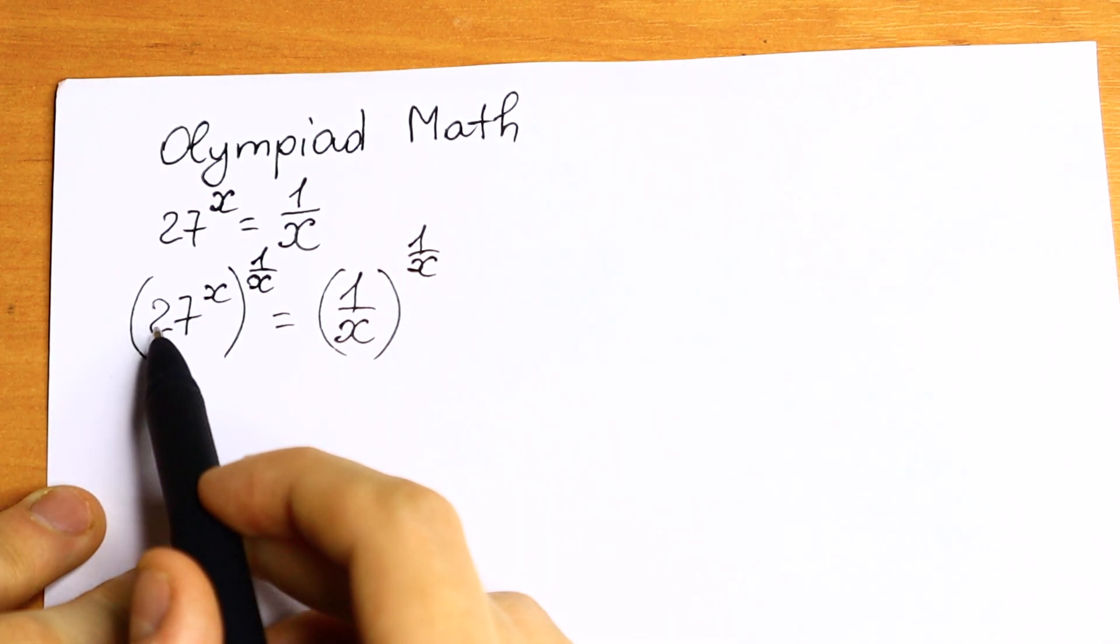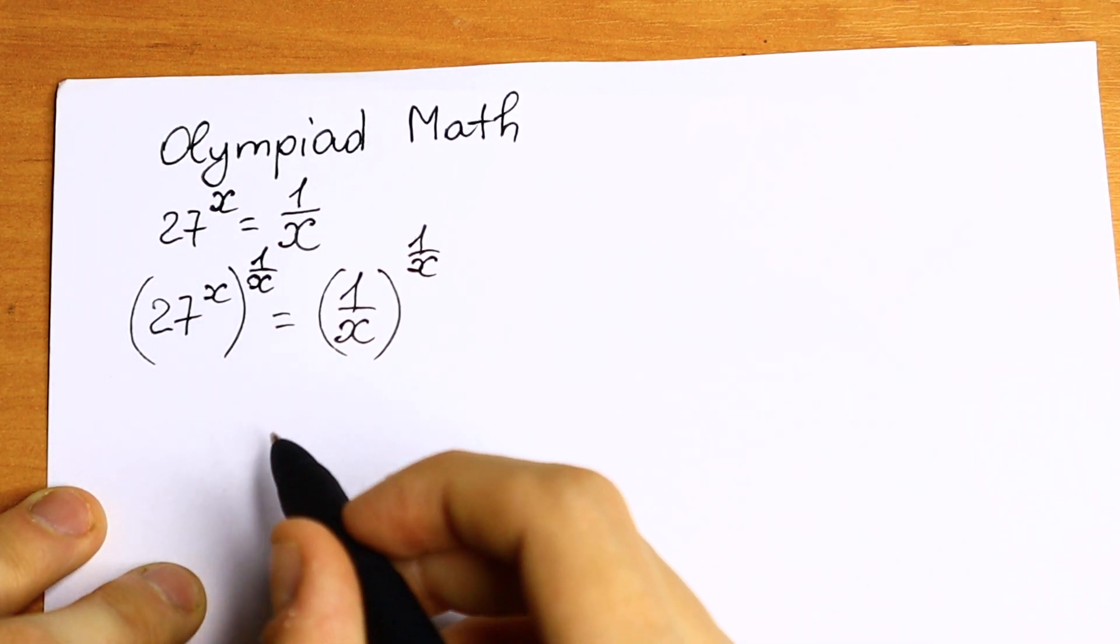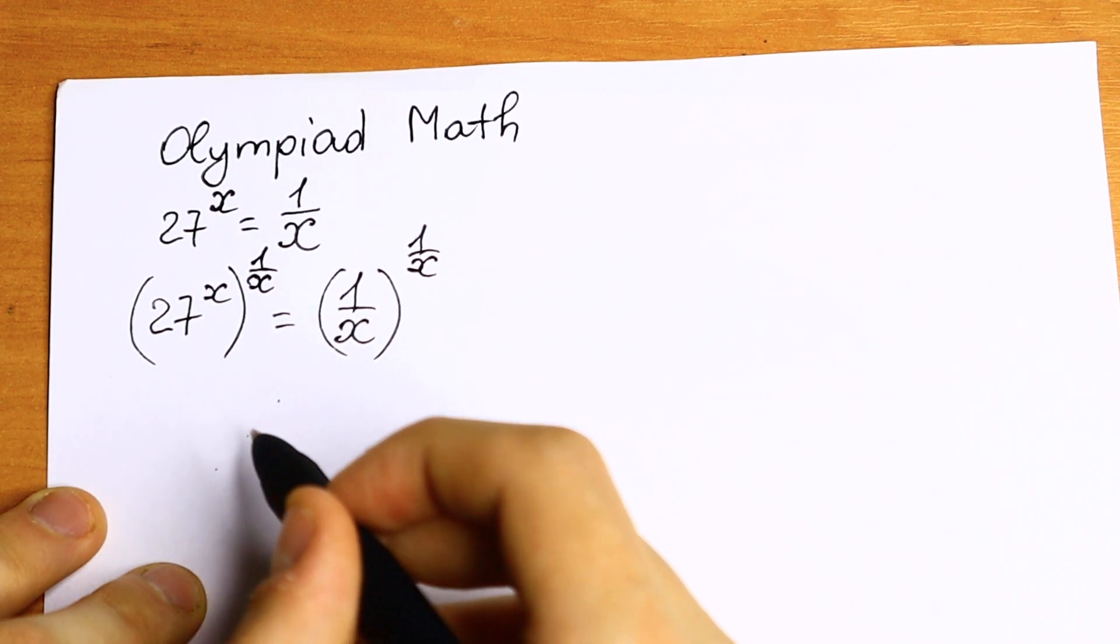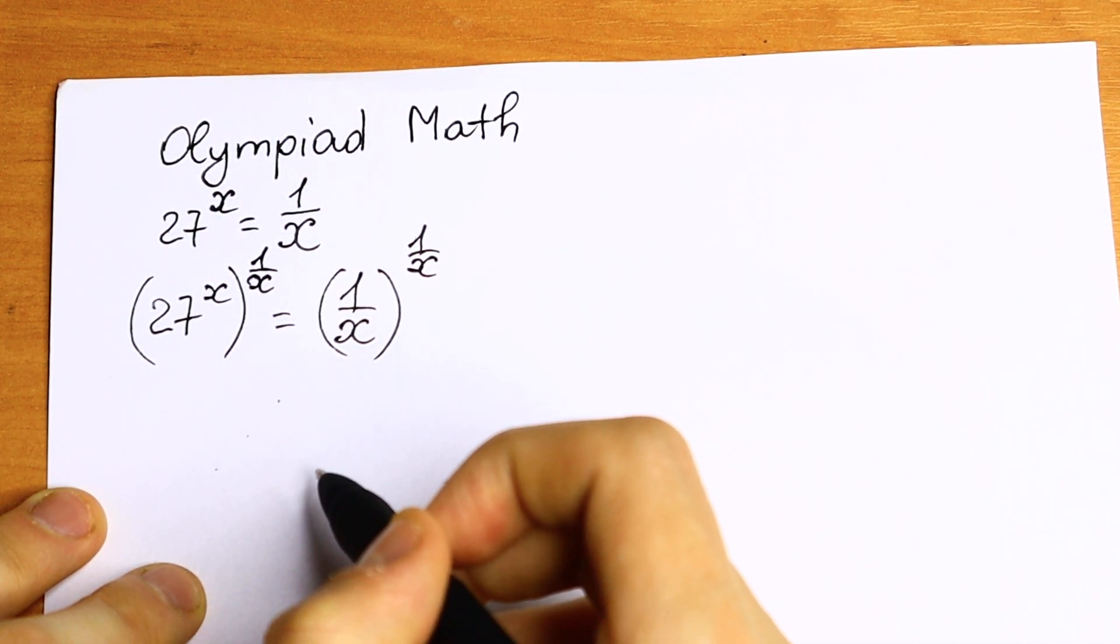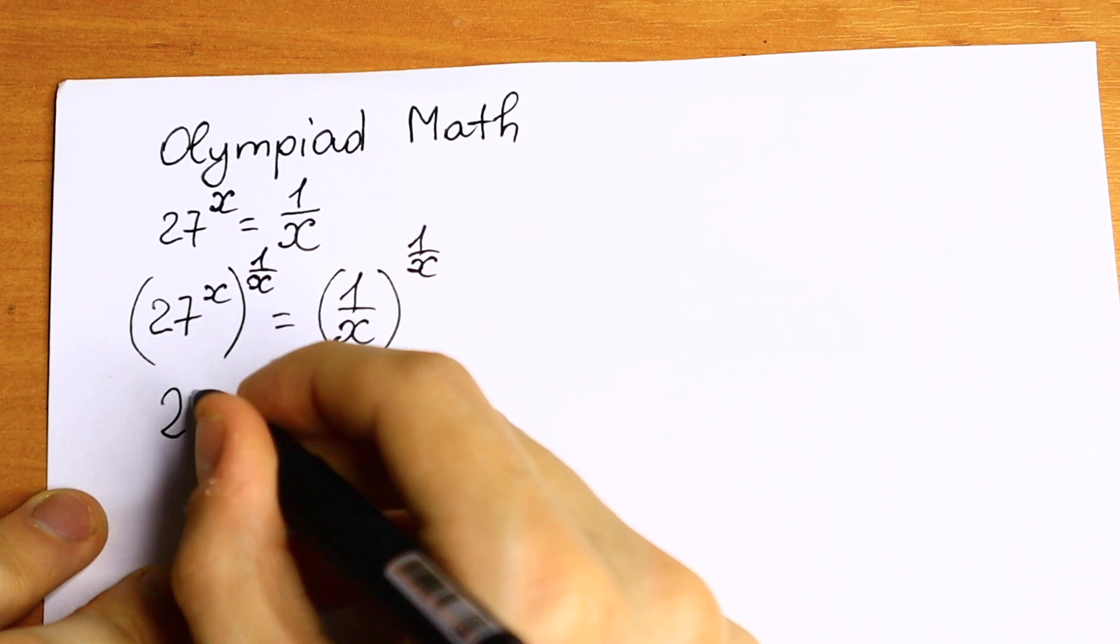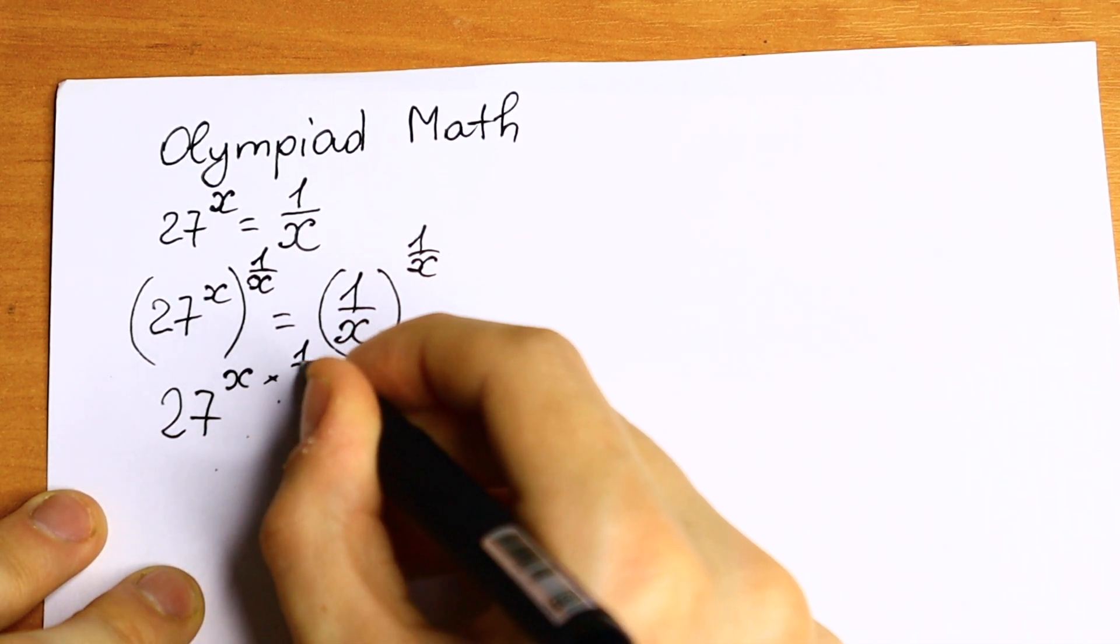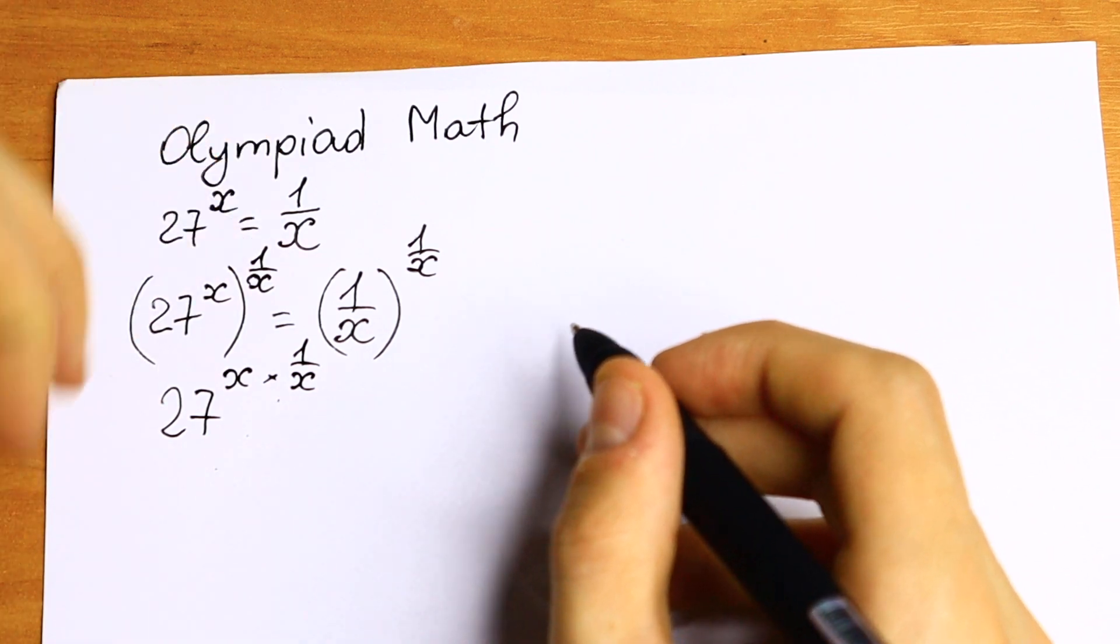What we are going to do next? Take a look. Here we have a situation that looks like that. We have a to the power x raised to the power b, and we need to multiply these two powers. And let's do this. We will have 27 to the power x times 1 over x.